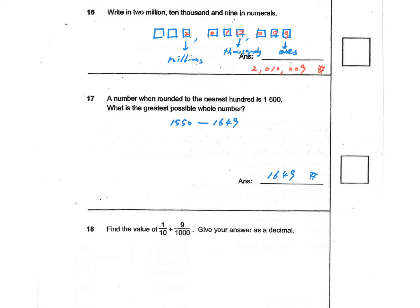In question 18, we want to find the value of 1 over 10 plus 9 over 1,000. Most importantly, we need to figure out the answer as a decimal number. So let's do it: 1 over 10 plus 9 over 1,000.